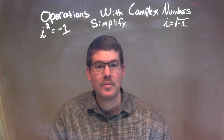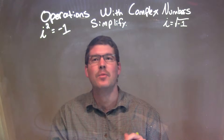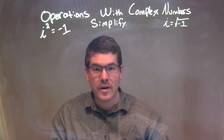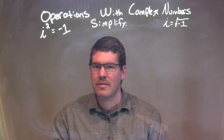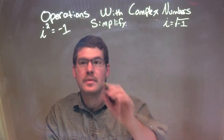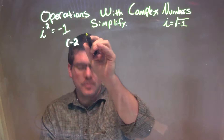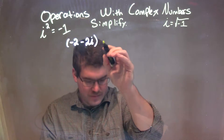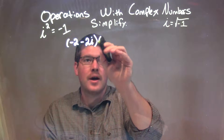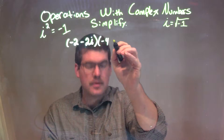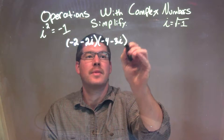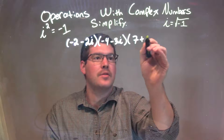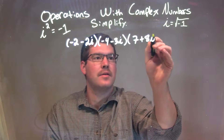Hi, I'm Sean Gannon, and this is MinuteMath, and today we're going to learn about operations with complex numbers, and we're going to simplify. So, if I was given this problem: negative 2 minus 2i times negative 4 minus 3i times 7 plus 8i.